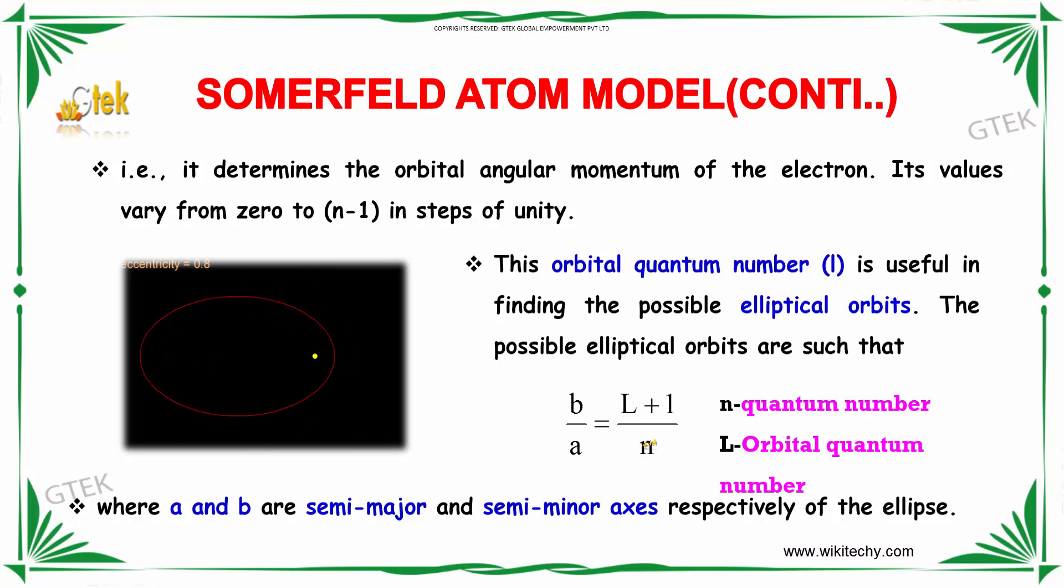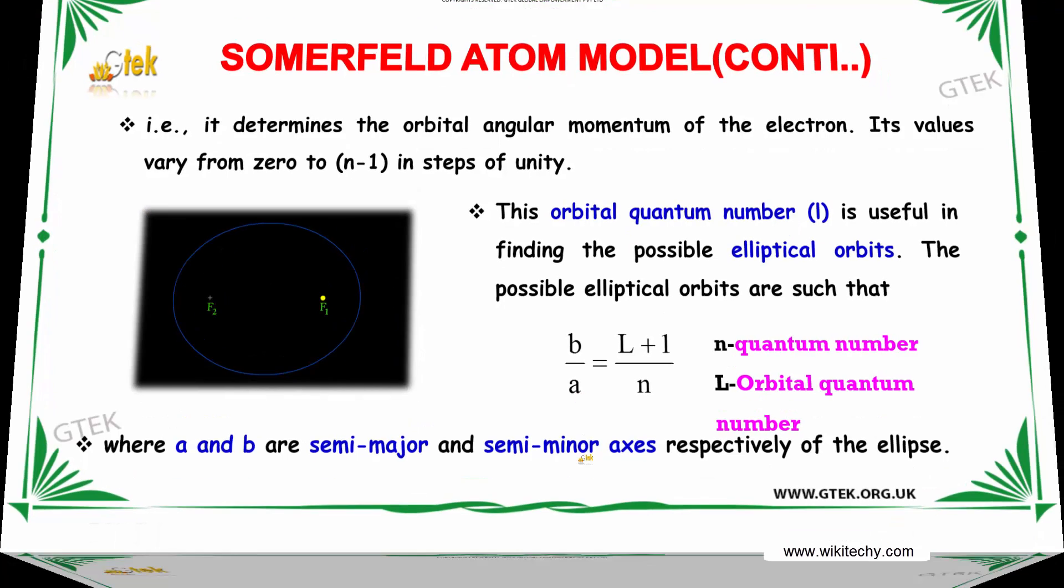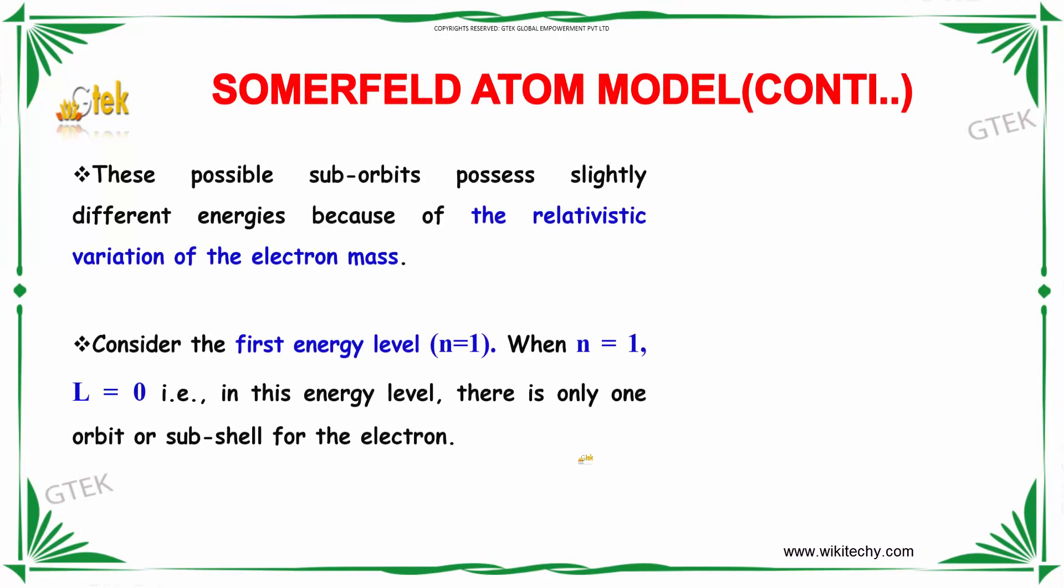The possible elliptical orbits are such that n is the quantum number and L is the orbital quantum number, where a and b are semi-major and semi-minor axis respectively of the ellipse. These possible suborbits possess slightly different energies because of the relativistic variation of the electron mass.